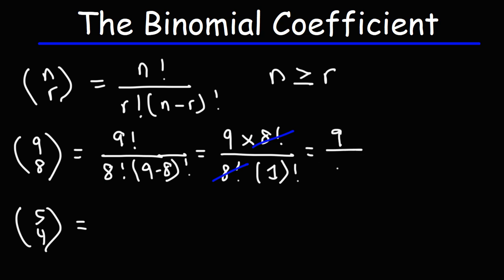We get 9 over 1 factorial is 1, so we just get 9. Notice that when n is 1 unit above r, we're going to get n, whatever n is. So here, 9 is 1 unit above 8. So in this case, we just get 9. Let's see that for the next example.